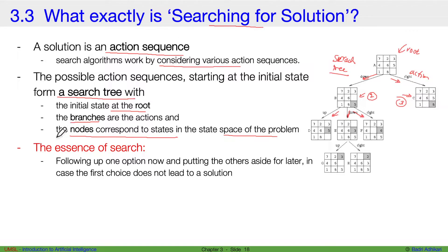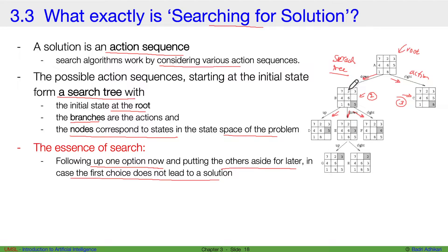The essence of search — when we say we are searching for a solution — is following up one option now and putting all others aside for later, in case the first choice does not lead to a solution. Searching basically means make one choice now, leave the others for some time, and continue this until you find a solution. You take one action, leave others aside for a while, then take another action, leave all others aside for a while, and repeat this until you find a solution.